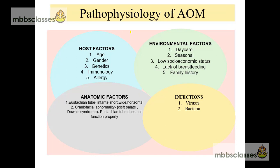The pathophysiology of acute otitis media is multifactorial. The factors responsible for its development are host factors, environmental factors, anatomic factors, and infections. Among the host factors, the first is age. The highest incidence of acute otitis media is seen in infants between 6 to 12 months of age, and it is seen that if acute otitis media occurs before 6 or 12 months of age, it is a powerful predictor of recurrence.